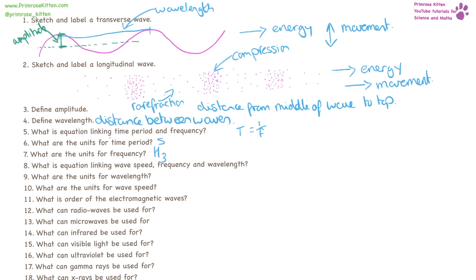The equation linking wave speed, frequency and wavelength is speed equals frequency times wavelength. Wavelength there is lambda. The units for wavelength are meters. The units for wave speed are meters per second.